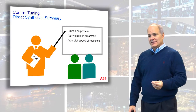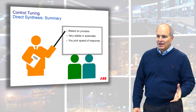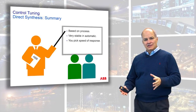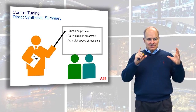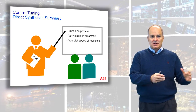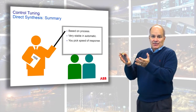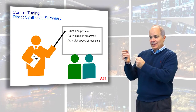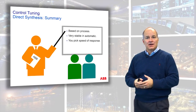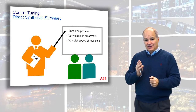What I like about direct synthesis tuning is it's very stable, it's based on the process, and you get to pick the speed of the response. You assume self-regulating processes are first order — process gain and time constant — use the PI algorithm, pick a tau ratio that adjusts speed relative to model mismatch, and you can tune your loops.